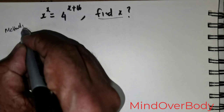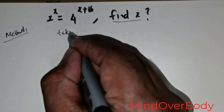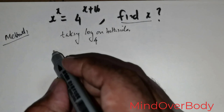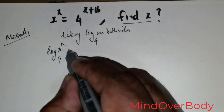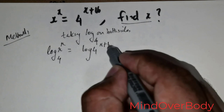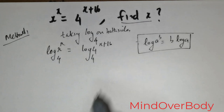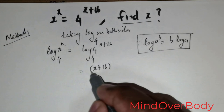Method one: I'm going to take log on both sides, and the base for the logarithm is going to be base 4. So I get log of x raised to the power x to the base 4 is equal to log of 4 raised to the power x plus 16 to the base 4. We have the formula log a raised to the power b equals b times log a.